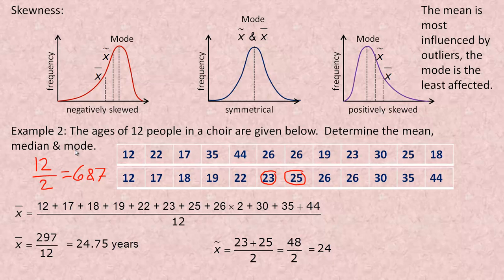The mode is the most frequently occurring number. Everything occurs once except 26, which occurs twice, so the mode is 26. If every number occurs once, you would say there is no mode. If two numbers occurred the same amount of times more than once, there'd be two modes and it would be said to be bimodal.